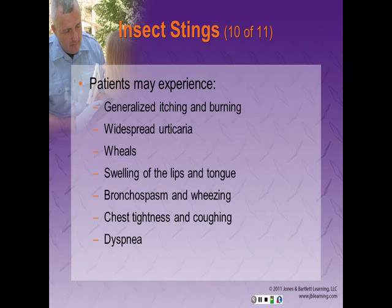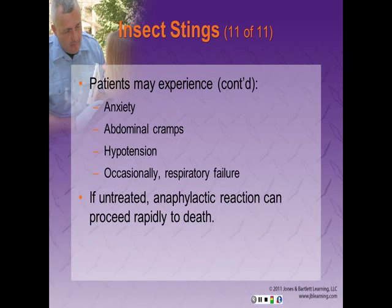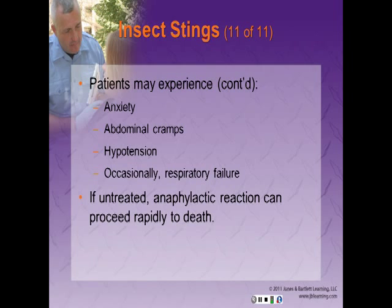Patients may experience generalized itching and burning, widespread urticaria, wheals, swelling of the lips and tongue, bronchial spasm and wheezing, chest tightness and coughing, and dyspnea, as well as anxiety, abdominal cramps, hypotension, and occasionally respiratory failure. If untreated, an anaphylactic reaction can proceed rapidly to death. More than two-thirds of patients who die of anaphylaxis do so within the first 30 minutes, so speed on your part is essential.